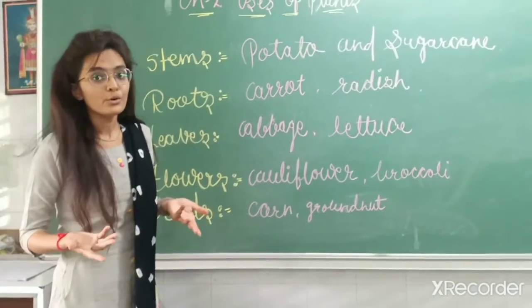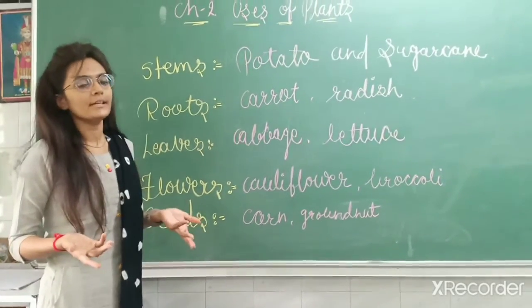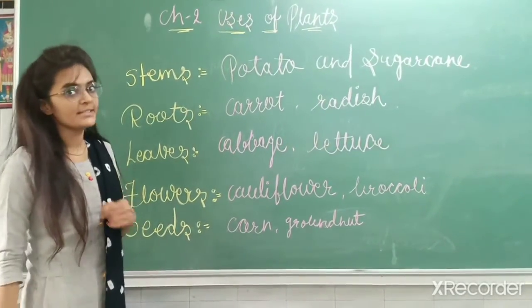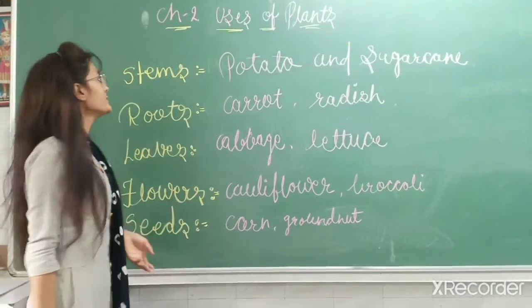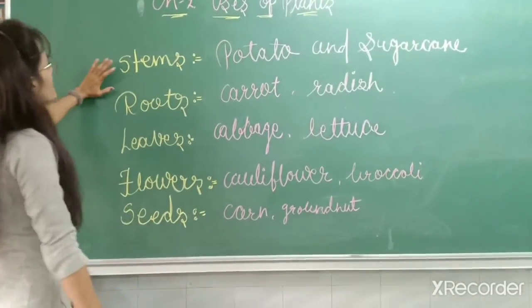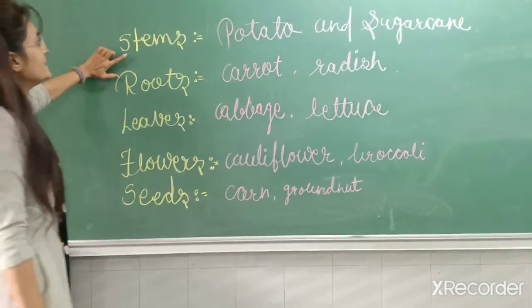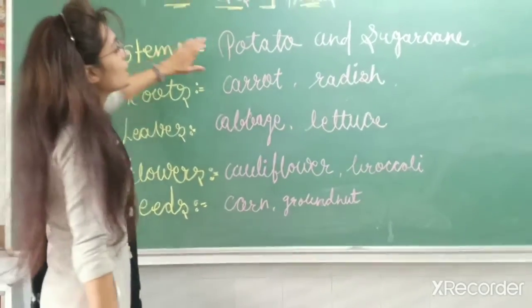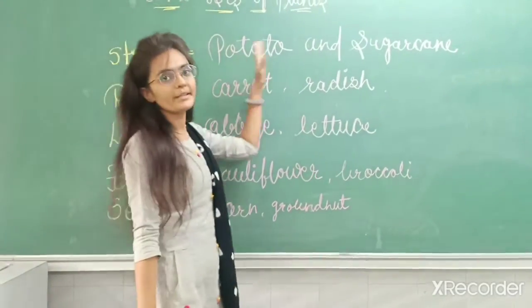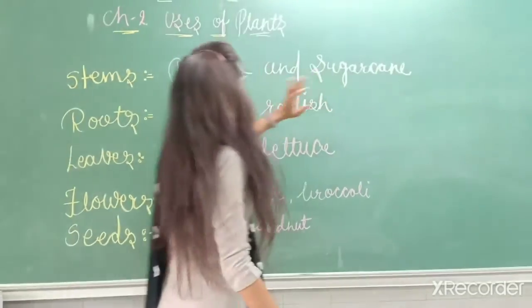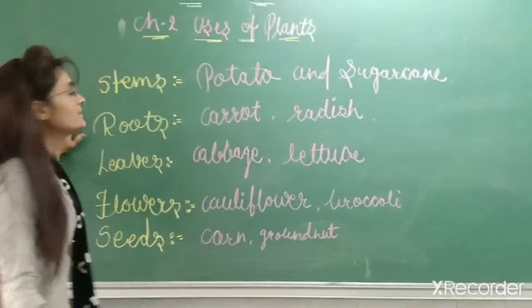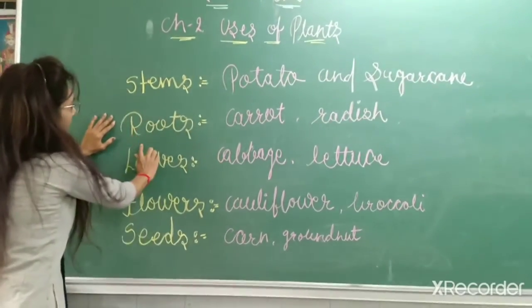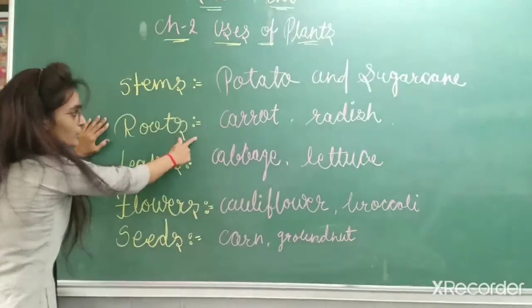Do you know we take different parts of plants as vegetables? Let us look at them. First are stems. Next are roots — carrots and radishes come under roots. Next are fruits.